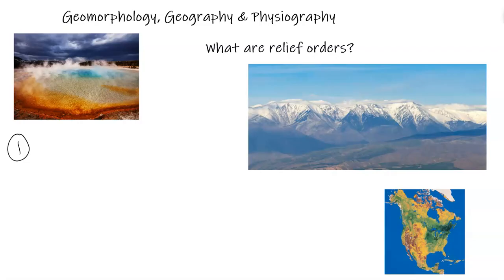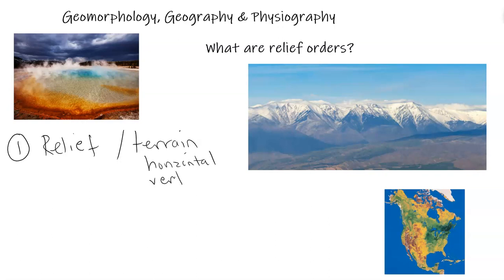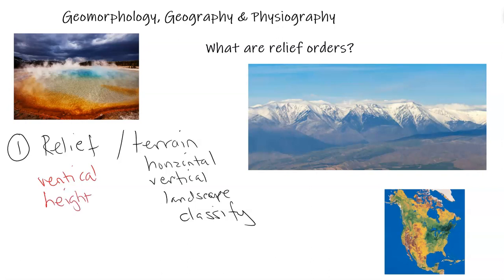A definition of relief: relief is a term that can sometimes be used interchangeably with the word terrain in geology and geography. Terrain relates to both the horizontal and vertical parts of the landscape — how to classify these. Whereas relief is more focused on the vertical: height, elevation, and distance from a given point to another.